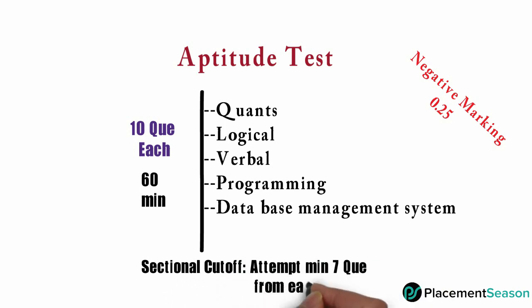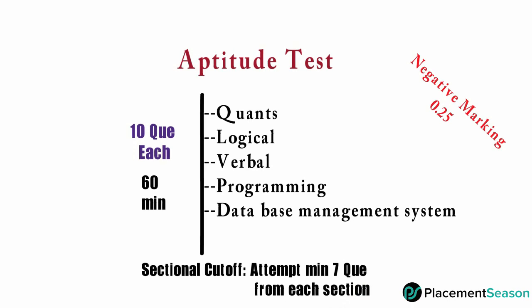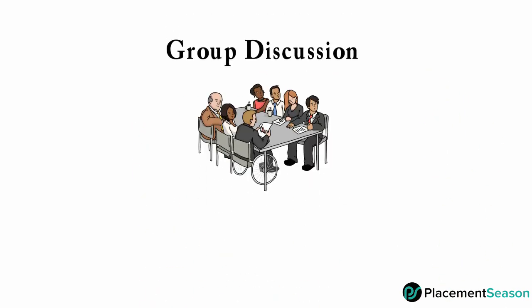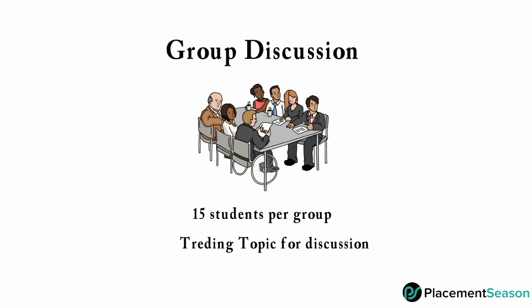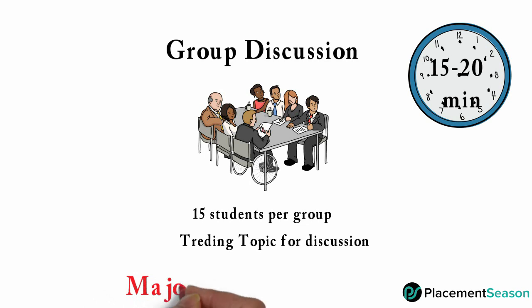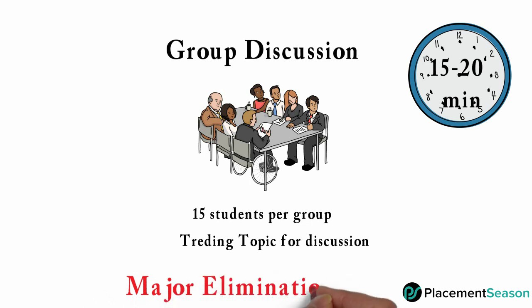The next round is group discussion. Each group contains at least 15 students. Students will get a currently trending topic for discussion with a 15 to 20 minutes time limit. This round is a major elimination round, so be careful and show your talent.